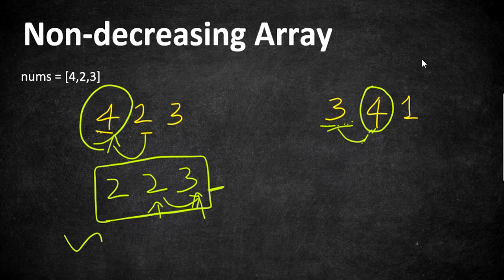If we are trying to update the middle value to 1 that is actually what is there in the last position, the array is going to become 3, 1, 1. Again it is not a non-increasing array because the first number is higher and the other two numbers are lower.